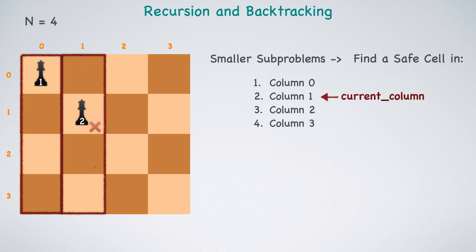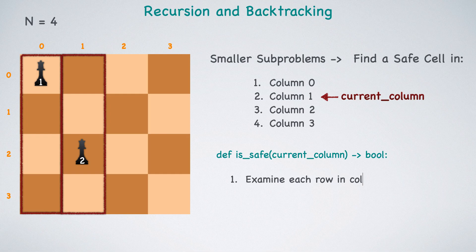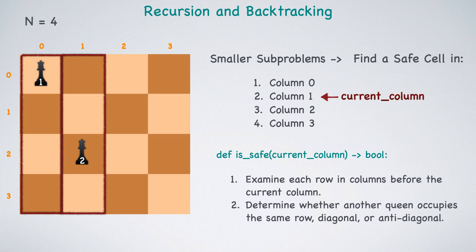These two cells are not safe, but this cell right here is safe for the second queen. Every time we attempt to place a queen, we will call the ISSAFE function which will take the current column as a parameter and return a bool to indicate whether the queen can be safely placed there or not. We will discuss the ISSAFE function in more depth shortly, but in a sense, the approach involves the following steps. Examine each row in columns before the current column. Determine whether another queen occupies the same row, diagonal or anti-diagonal.